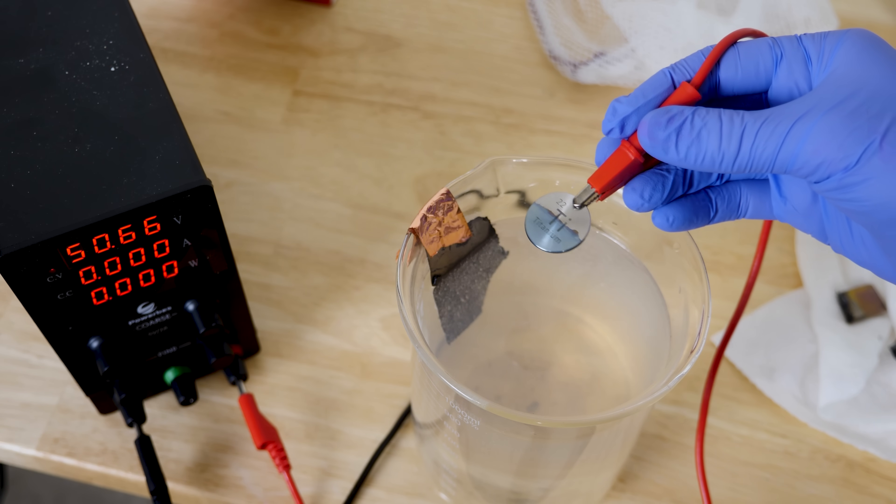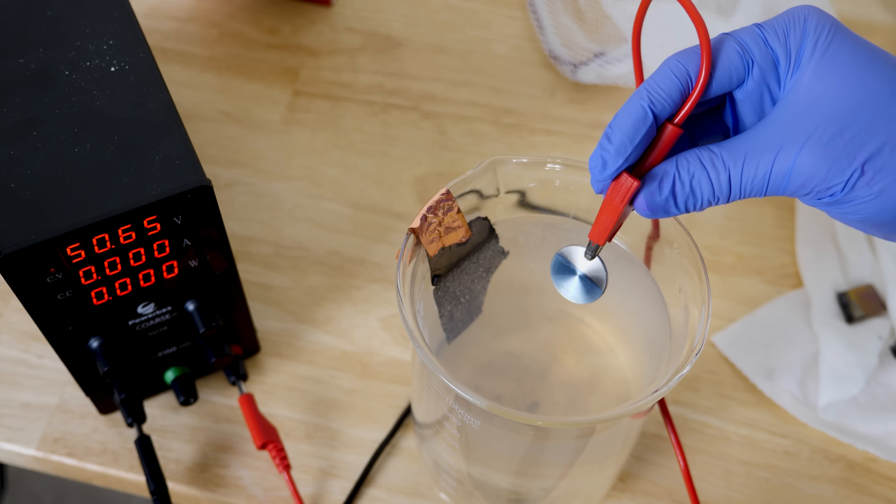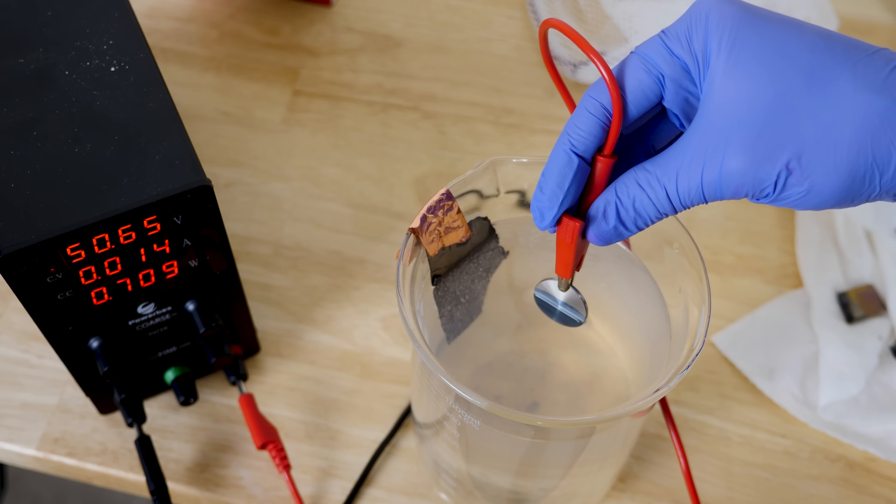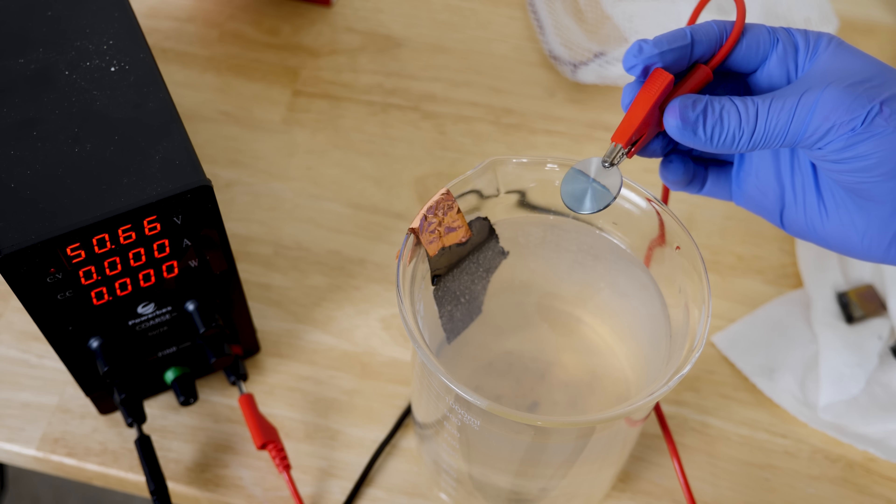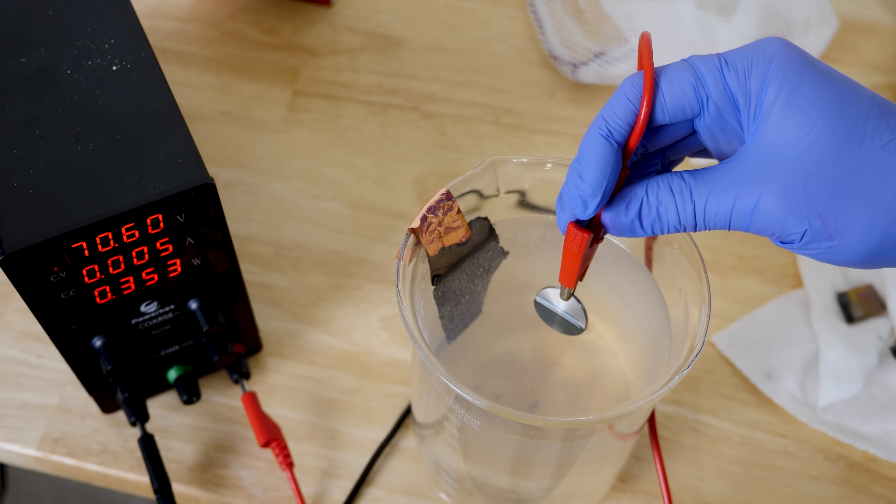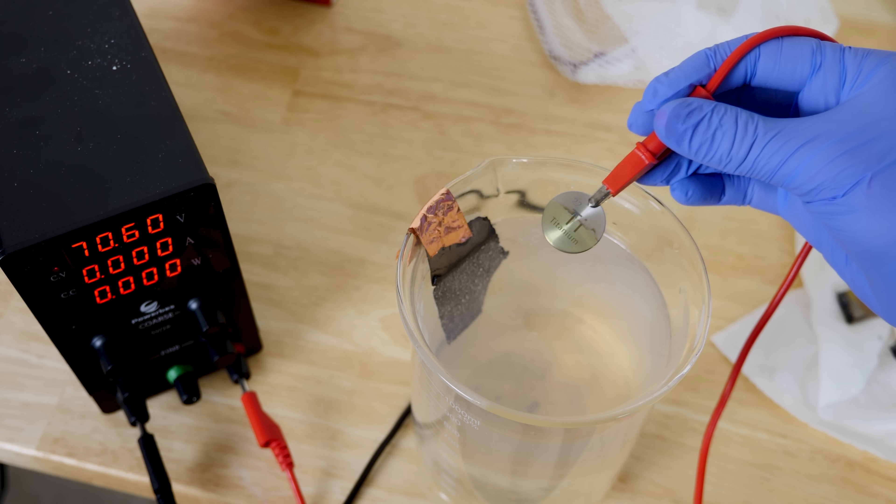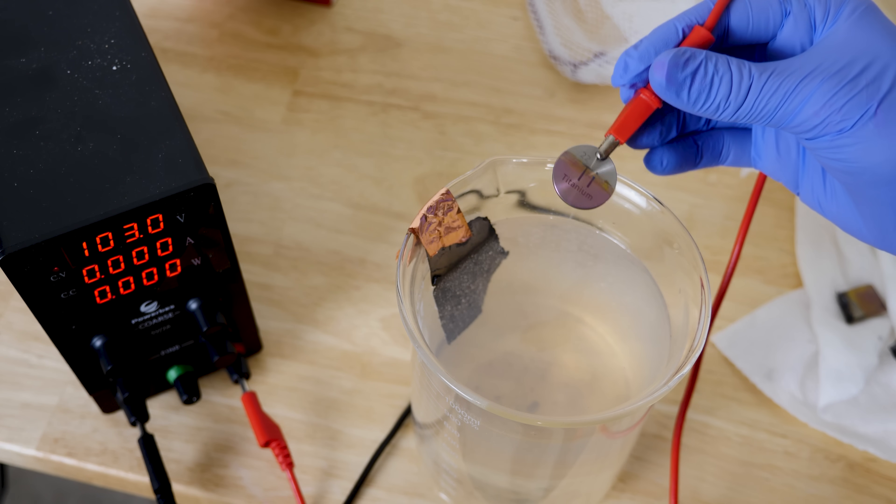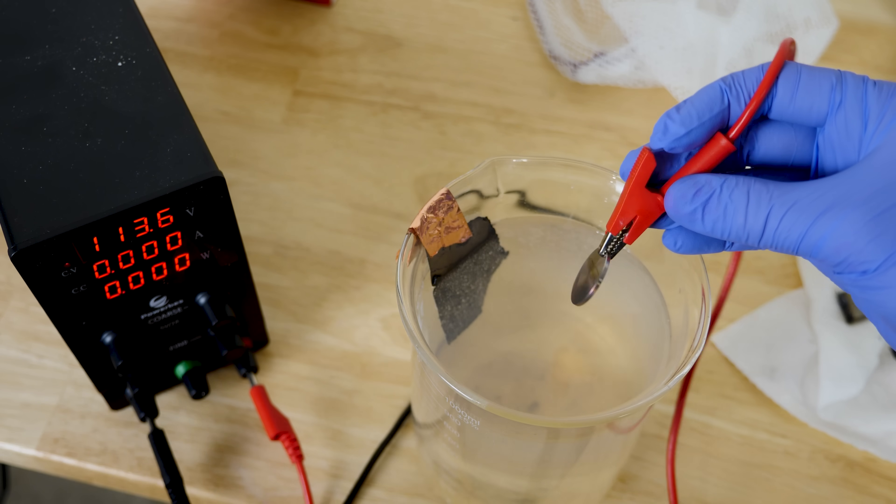Then what's interesting now is it starts to lighten up again as we go higher. So we're at 50 volts now, but we're at kind of this light blue color. Now we're getting to this golden color. So I have this nice pink color. Turn it up as high as we can go.